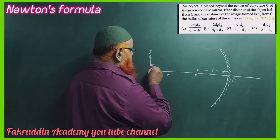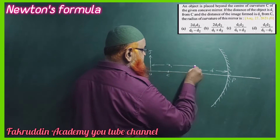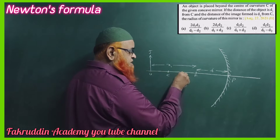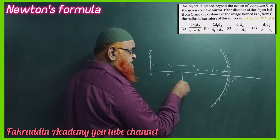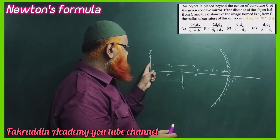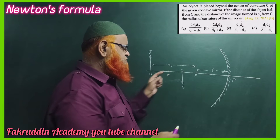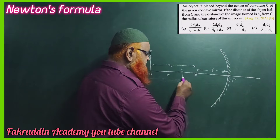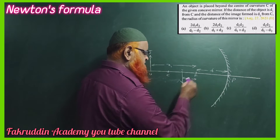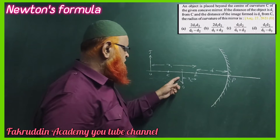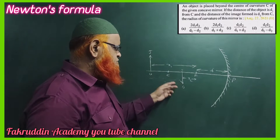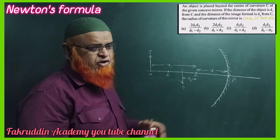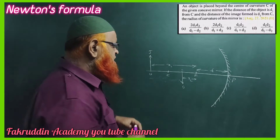If the object is kept at this place, let us take that distance as x1, and let us imagine the image you are getting is between F and C. From the focal point, the object is at a distance of x1, and from the focal point the image is at a distance of x2. Now let me discuss how we are going to derive Newton's formula.